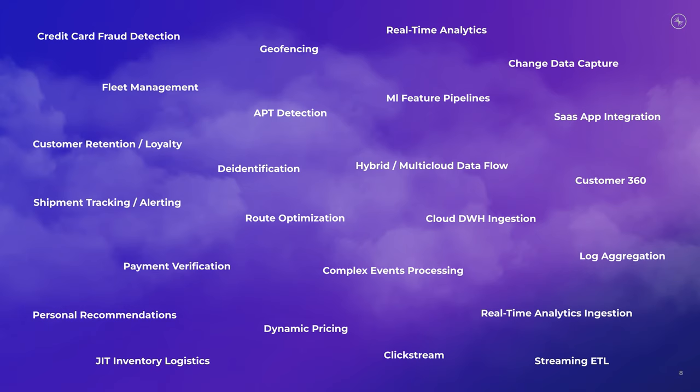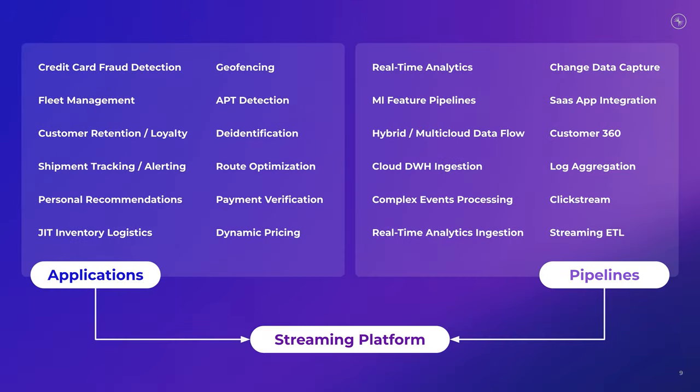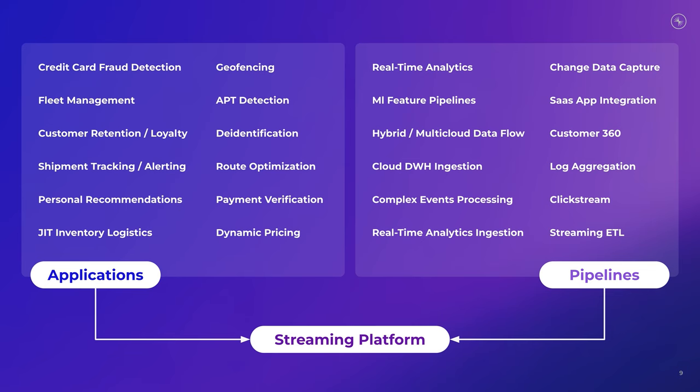At Confluent, our focus is really trying to build something that can act as the central nervous system for this data flow — connecting up to all the different data systems and applications, taking these streams and making them accessible to all the different use cases. We've seen a vast array of these use cases, ranging from detecting credit card fraud to bridging across on-premise and cloud environments to rich real-time customer 360 analysis dashboards and personalization. If you're trying to categorize these more simply, you can cut them into applications carrying out business logic in real-time on these streams, and pipelines — flows of data getting data from place to place, to the right systems, applications, and SaaS layers at the right time. Today I'm going to be talking about the pipelines, about the real-time data flows.